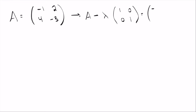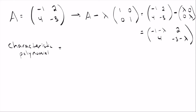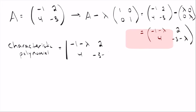So that looks like taking the original matrix, negative 1, 2, 4, negative 3, and subtracting lambda times the identity. When you multiply lambda through — lambda times 1 is 1, lambda times 0 is 0, and so forth — what you get is negative 1 minus lambda, 2 minus 0, 4 minus 0, and negative 3 minus lambda.